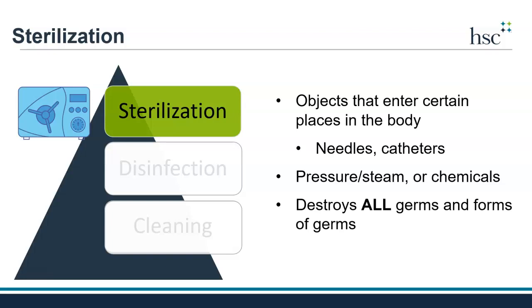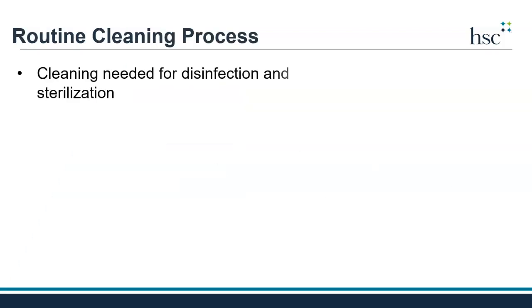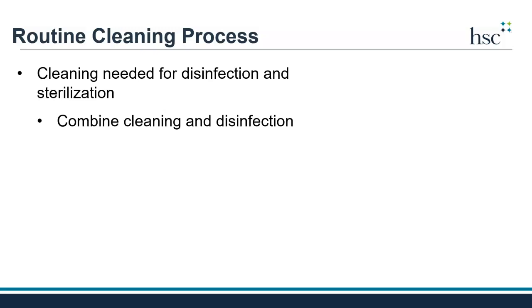Sterilization is required of these items because if these germs were to enter these special places in your body, your risk for an infection and severe illness are very high. Cleaning is foundational to protect the nursing home environment. For some surfaces, if they are not too dirty or soiled, it's recommended to combine cleaning and disinfection so they are done at the same time — for example, using a disinfectant wipe on doorknobs. But cleaning is definitely not a step that can be skipped for either disinfection or sterilization.